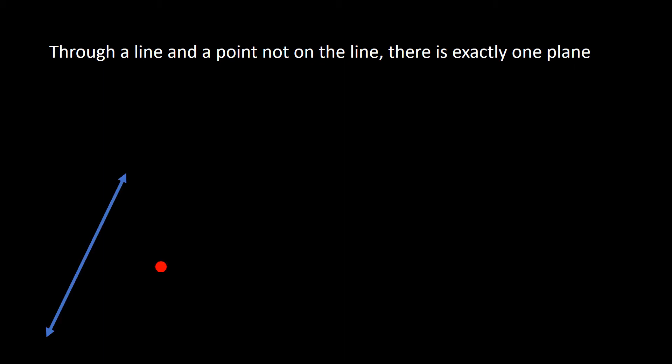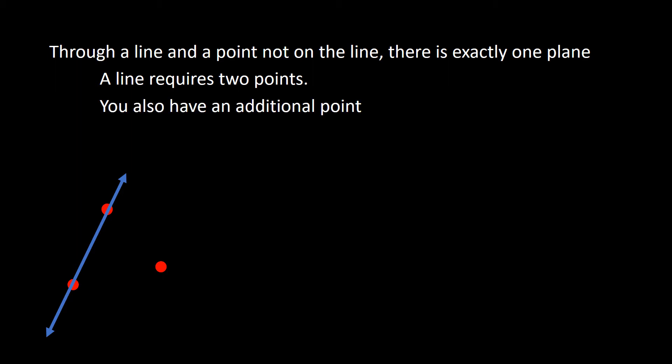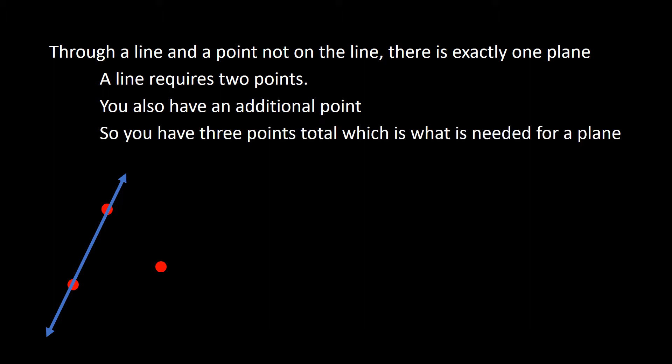Now using these different terms, there are a couple of theorems or facts to know. The first one says: through a line and a point not on the line, there is exactly one plane. A line has two points to know which way it's going, and then the point not on the line gives a total of three points. Three points is our description of a plane, so we can conclude that through a line and a point not on the line, there is exactly one plane.